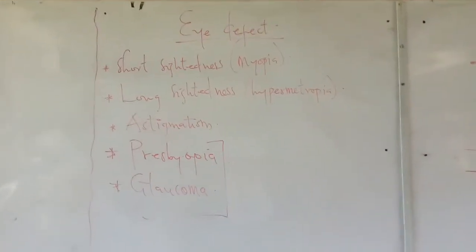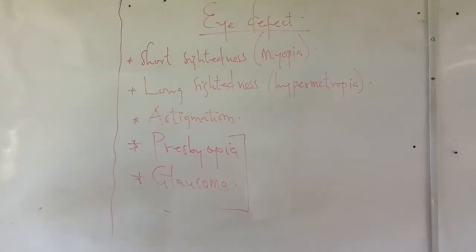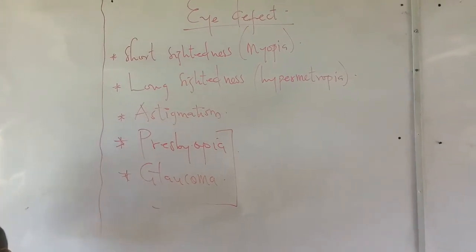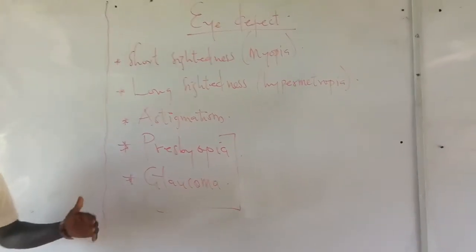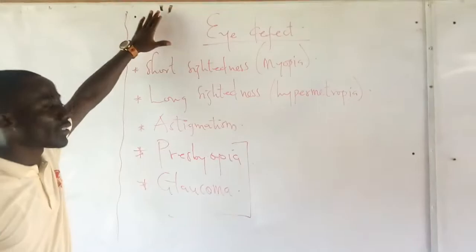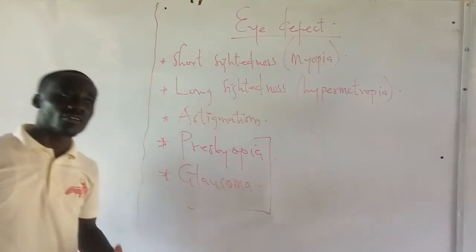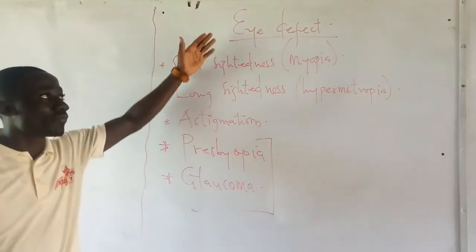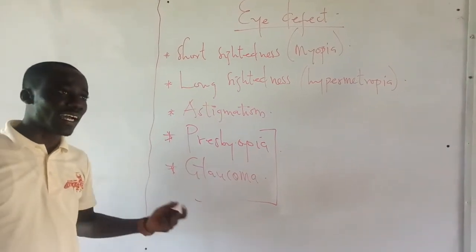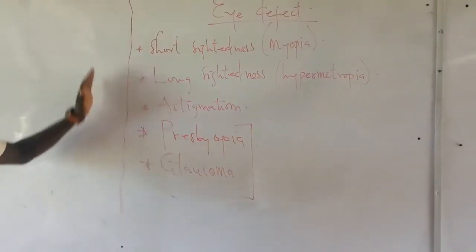In our previous lesson, we learned something about the eye — how each part contributes to the mechanism of seeing, and that before one can see, light must fall on an object and meet the eye. We went through all the processes of the mechanism of vision. I ended with what we call eye defects — a malfunctioning of certain parts of the eye as an organ, which contributes to its inability to see clearly or at all. Pertaining to these eye defects, we have several of them.